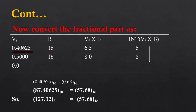0.40625 is multiplied by 16 because the target number's base is 16. The result is 6.5 — we keep the integer part 6, and the fractional value 0.5 is used for further multiplication. 0.5 is multiplied by 16, giving 8.0 — the integer part 8 is kept, and the fractional value is 0, which can't be multiplied further because any number multiplied by 0 is 0. Putting these two digits together gives 0.68, so the fractional part's hexadecimal equivalent is 0.68.